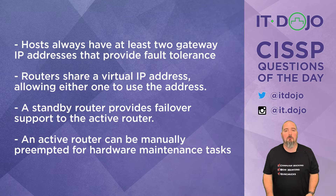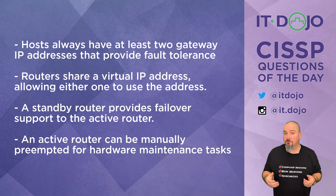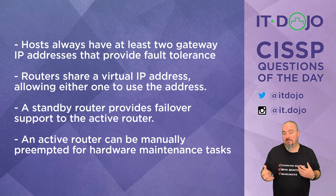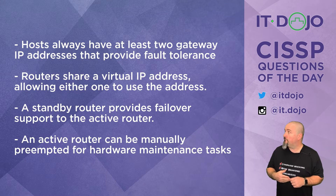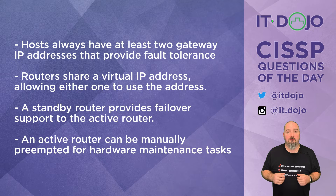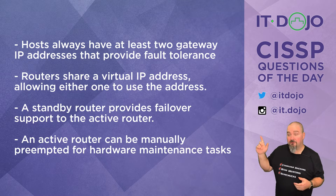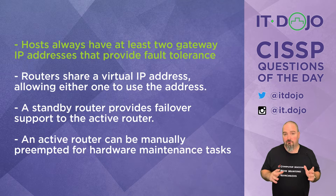Let's walk through the answers. The first answer choice is that hosts always have at least two gateway IP addresses to provide fault tolerance. That is definitely not a benefit of using FHRP — in fact, that is something you would absolutely not want to do. If a node has two default gateways, it has to choose between them, and we don't want nodes to have to do that. It's normal for a node to have a single gateway, and when using redundant routers via a virtual router, all nodes point to that virtual IP address.